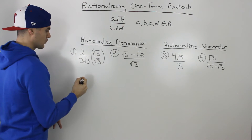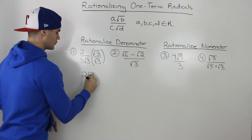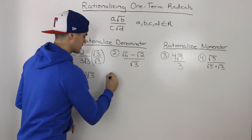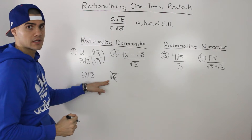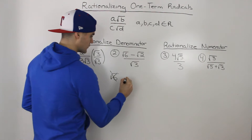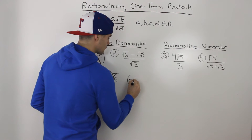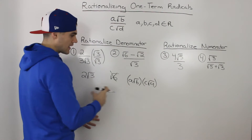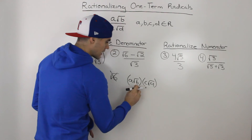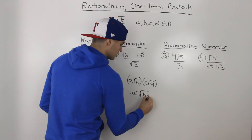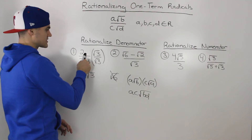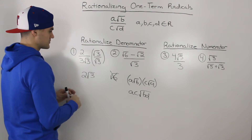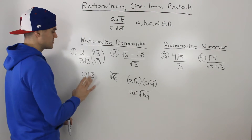2 times root 3 would just give us 2 root 3 in the numerator. Now you want to be careful in this step — when you multiply 2 and root 3, make sure that you don't write root 6. That's a common mistake. If you're multiplying a root b times c root d, the numbers outside the radical multiply together and the numbers inside the radical multiply together. But here the 2 is not inside a radical and the root 3 is, so you can't make it root 6 — you have to keep them separate, so it would be 2 root 3.